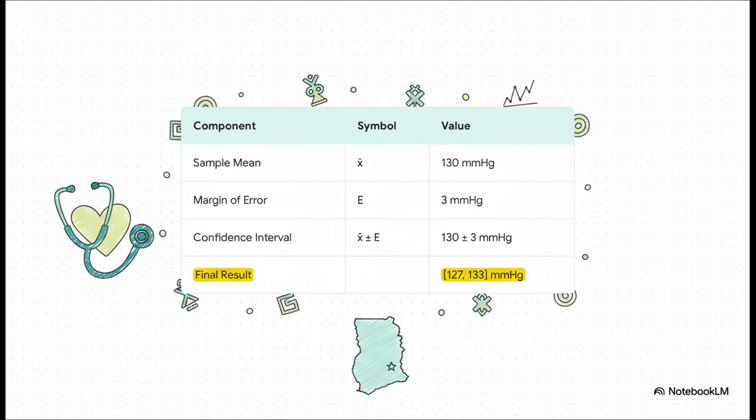This is where the magic happens. We start with our point estimate, 130. Let's say after our calculations, we find the margin of error is 3 millimeters of mercury. We just do the math. 130 minus 3 gives us 127. And 130 plus 3 is 133. And boom, there it is. Our 95% confidence interval is from 127 to 133 millimeters of mercury. We've officially gone from one shaky number to a solid, useful range.